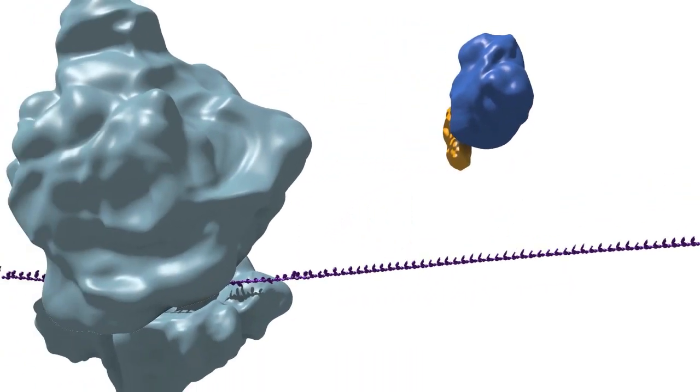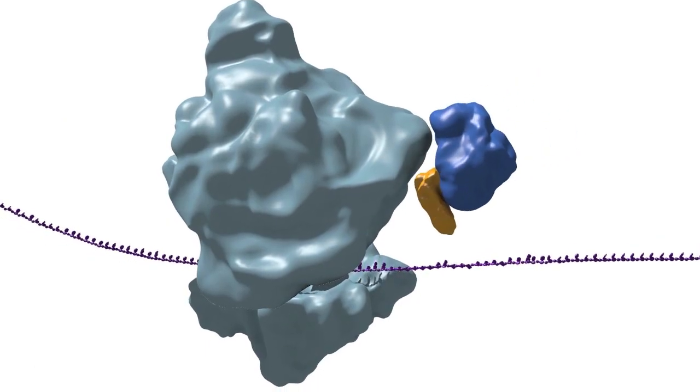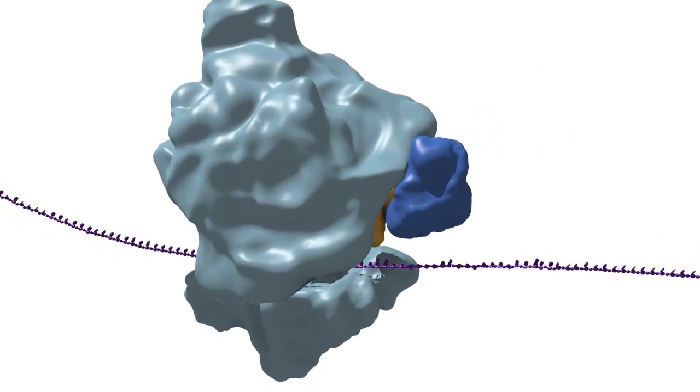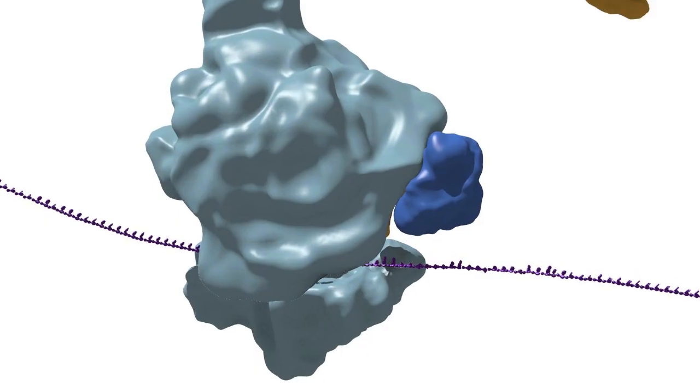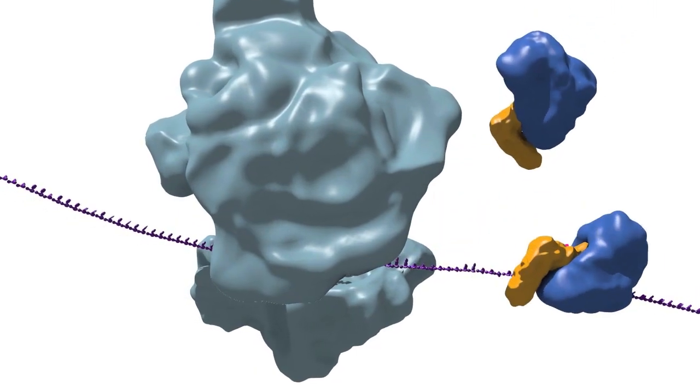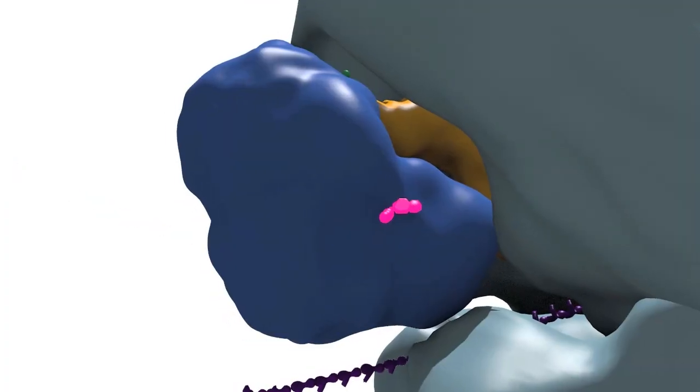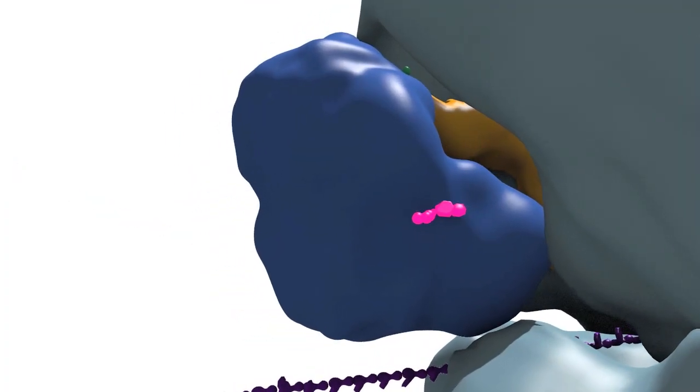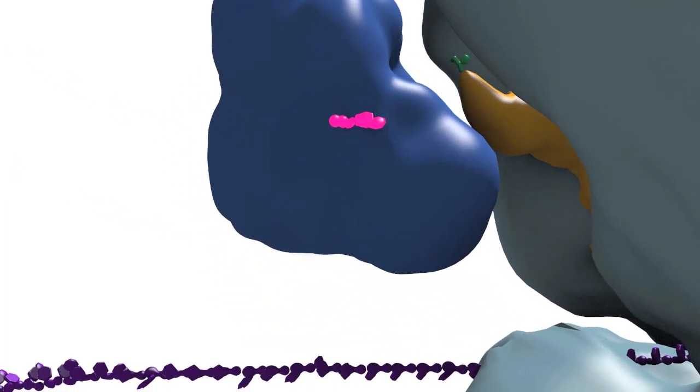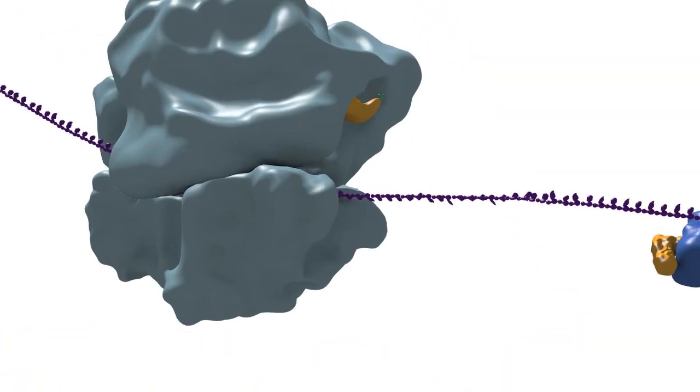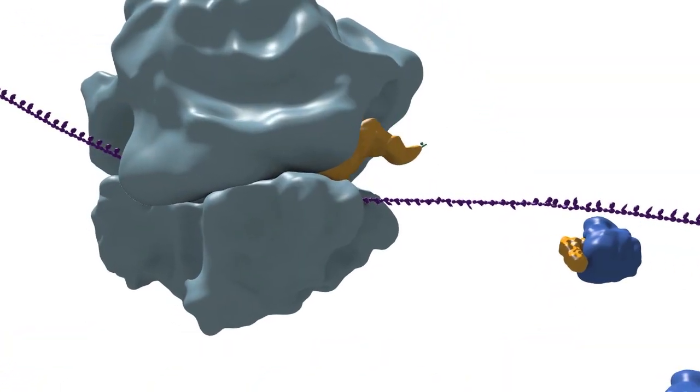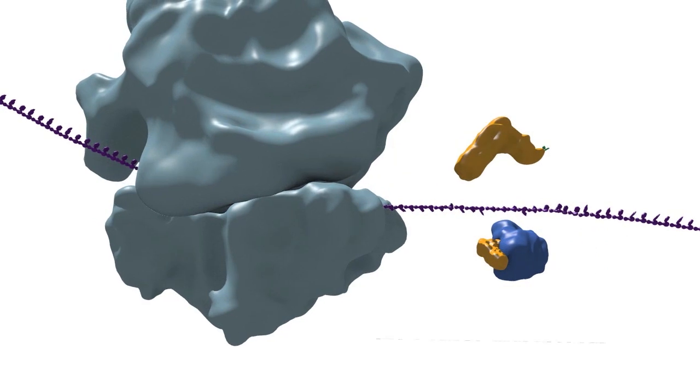In the initial selection phase, an aminoacyl tRNA in complex with EF-TU can be rejected or accepted by the ribosome. Once the complex has been accepted, GTP is hydrolyzed and EF-TU leaves the ribosome. A near-cognate tRNA can still be rejected in a second phase, which is referred to as proofreading.